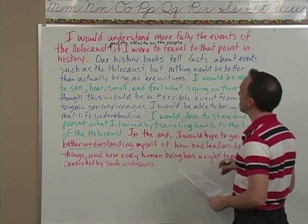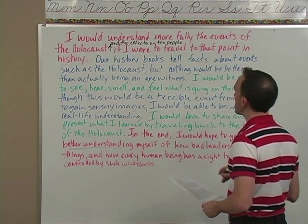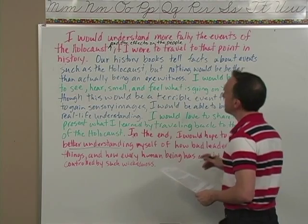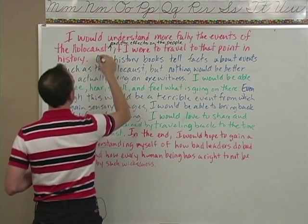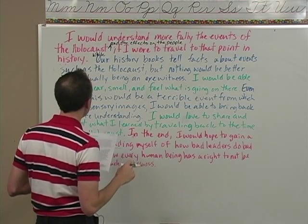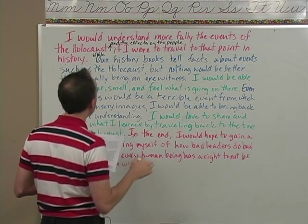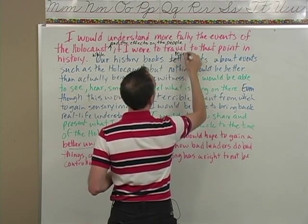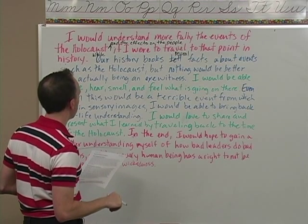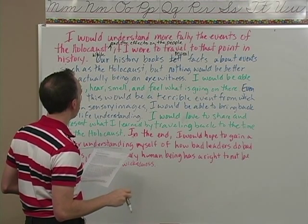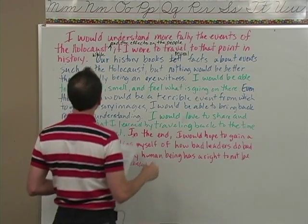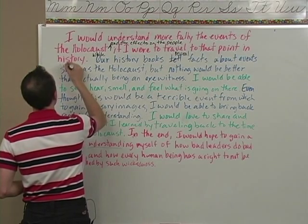'Our history books tell facts about events such as the Holocaust, but nothing would be better than actually being an eyewitness.' I think I'm going to start this sentence with 'while' and make that a dependent clause. While our history books reveal — instead of 'tell,' 'reveal' would be better — reveal facts about events, and let's include 'and statistics.' That would be great.